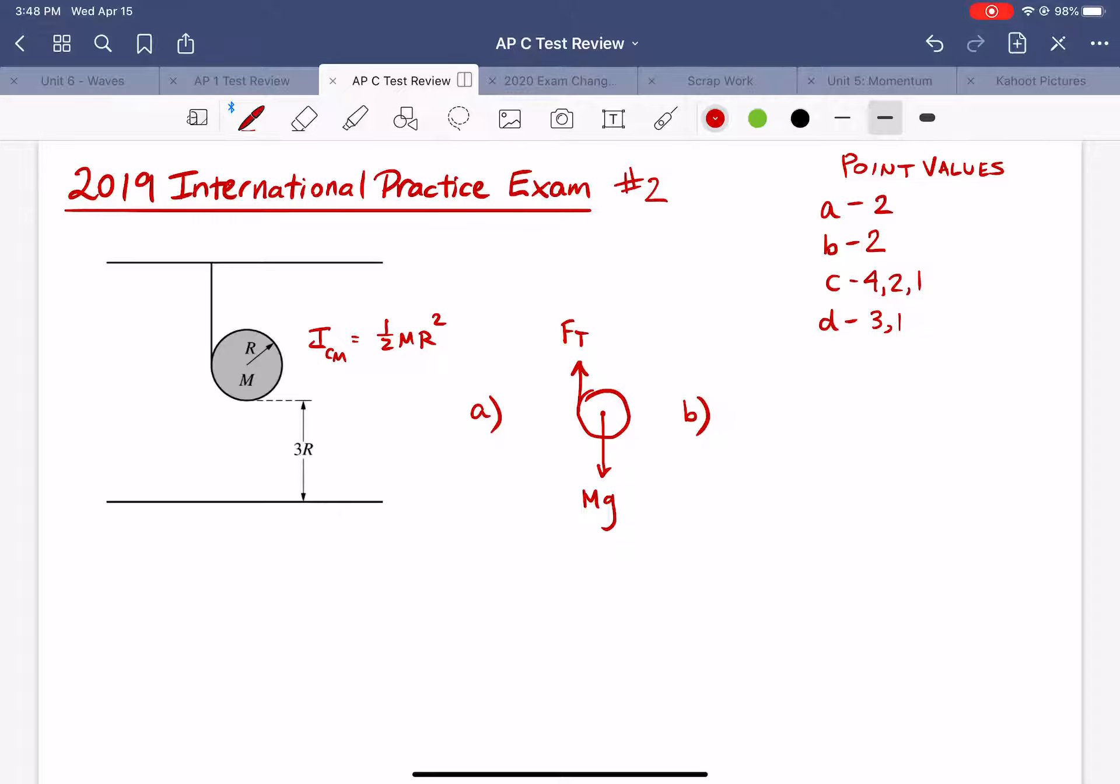So the answer to this question can be determined by looking at how the object accelerates. Obviously when you let this object go it's going to fall downward so the center of mass will accelerate downward which means that the net force has to point downward which means that the gravitational force is going to be greater than the tension in the rope.